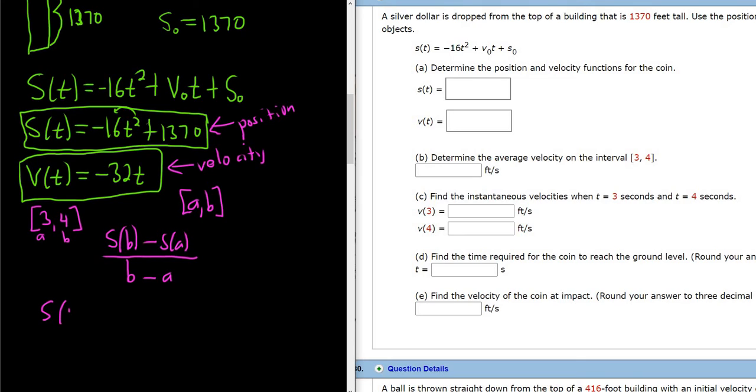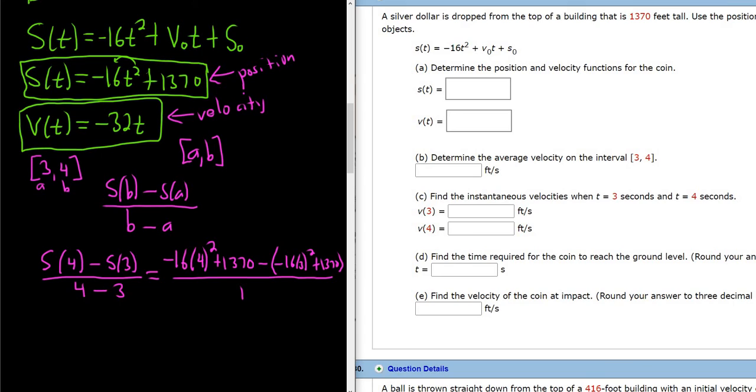All right, so a here is 3, and b is 4. So we have s(4) minus s(3) over, and then just use matching, 4,4, minus 3,3. See how the numbers match. So s(4) means we plug in 4 for all of the t's in our position function. So it will be negative 16 times 4 squared plus 1370 minus, then now we plug in 3's. So negative 16, 3 squared plus 1370. It's all being divided by 1. So I'm definitely going to use a calculator here. So let's see, negative 16 times 4 squared, so times 16 plus 1370. I'll do it in steps. So here I got 1,114 minus, and this next one is negative 16 times 9 plus 1370.